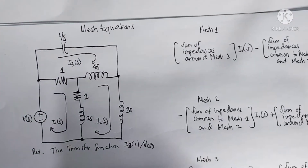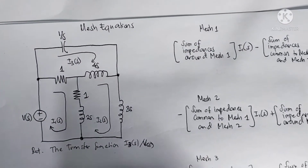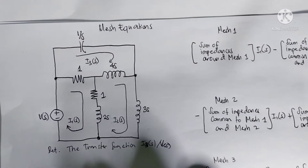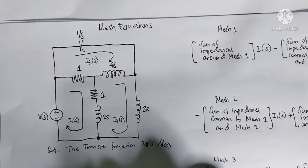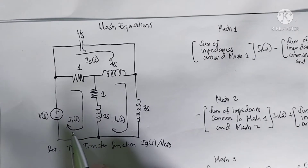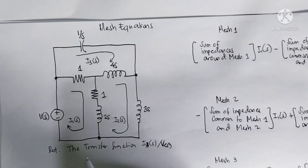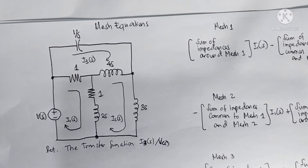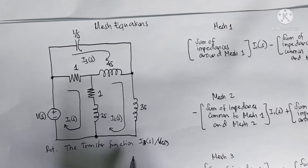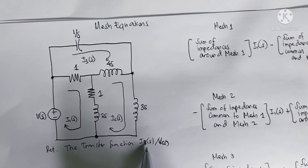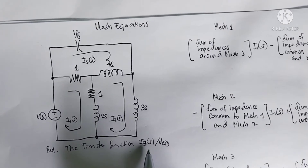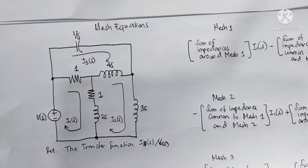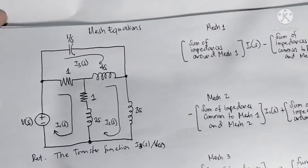Today we're going to talk about mesh analysis using this circuit. We have three loops which consist of mesh one, mesh two, and mesh three. We're going to find the transfer function of this circuit with the ratio of I3 as a function of s over V as a function of s.